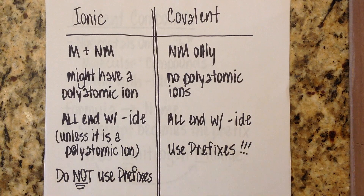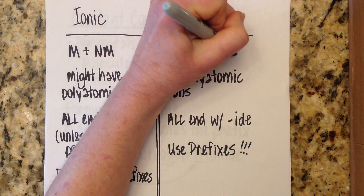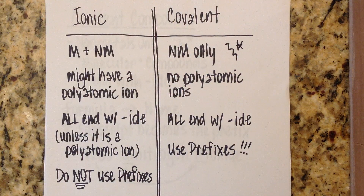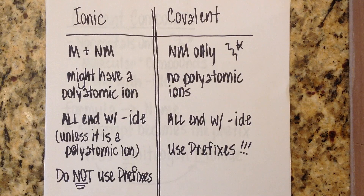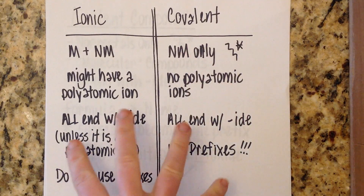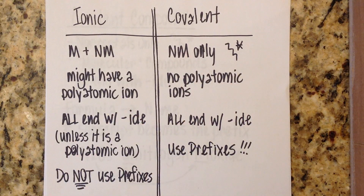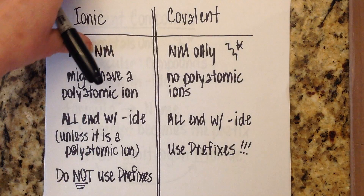Covalent compounds are nonmetals only. Everything in a covalent compound comes from the nonmetal part of the periodic table — you cannot have a metal. There are no polyatomic ions in a covalent compound, and they all end with IDE. Ionics and covalents both end with IDE unless it's an ionic with a polyatomic ion. Covalent is where we use prefixes — we use prefixes in everything. You may want to go back and make notes comparing and contrasting them.